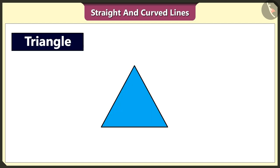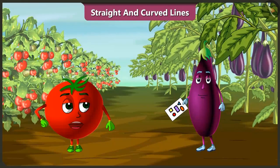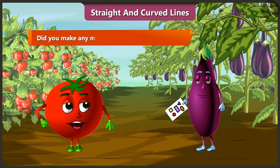Look, this triangle is also made using three straight lines. Yes. And this circle is made using a curved line. Did you make any more shapes using curved lines?